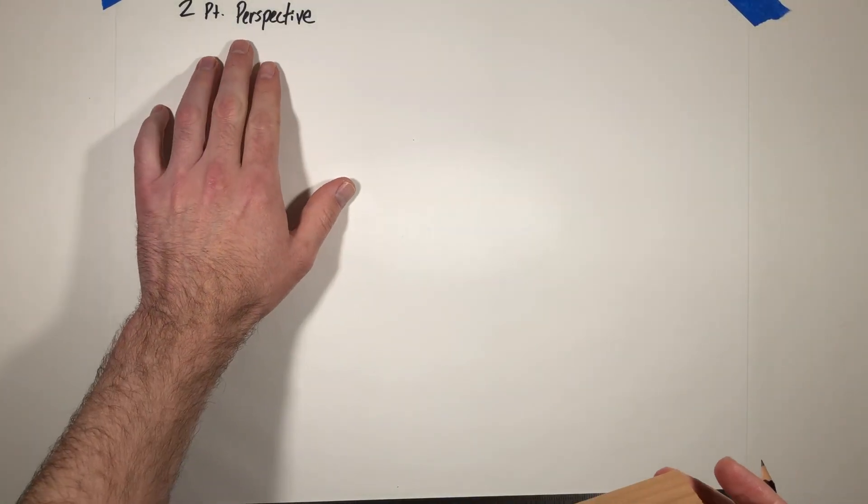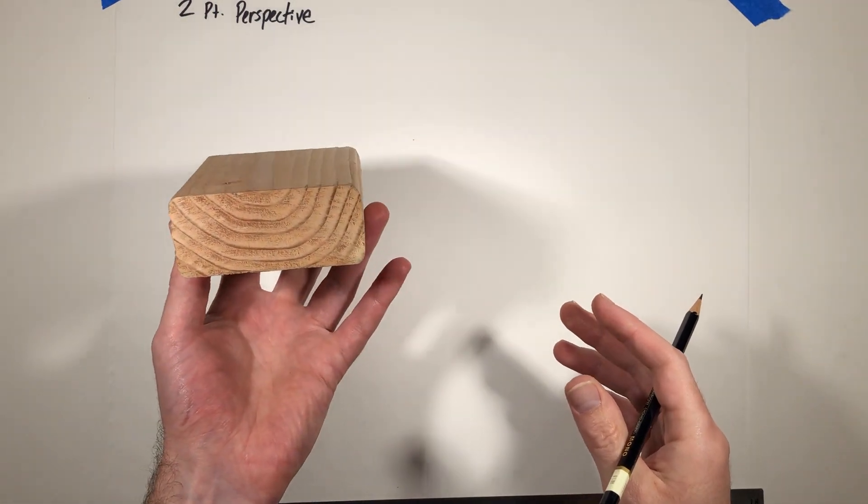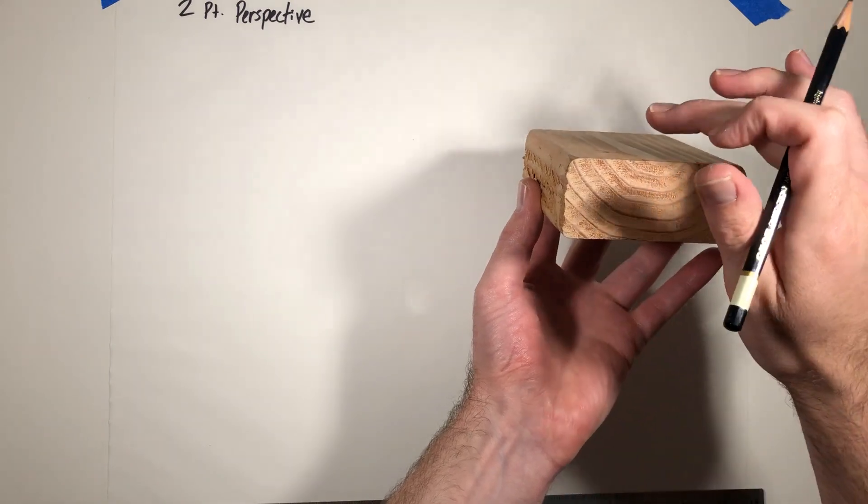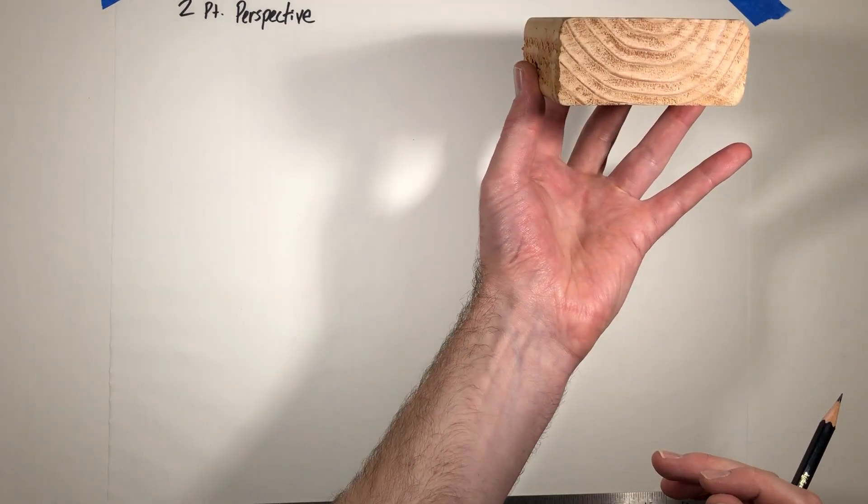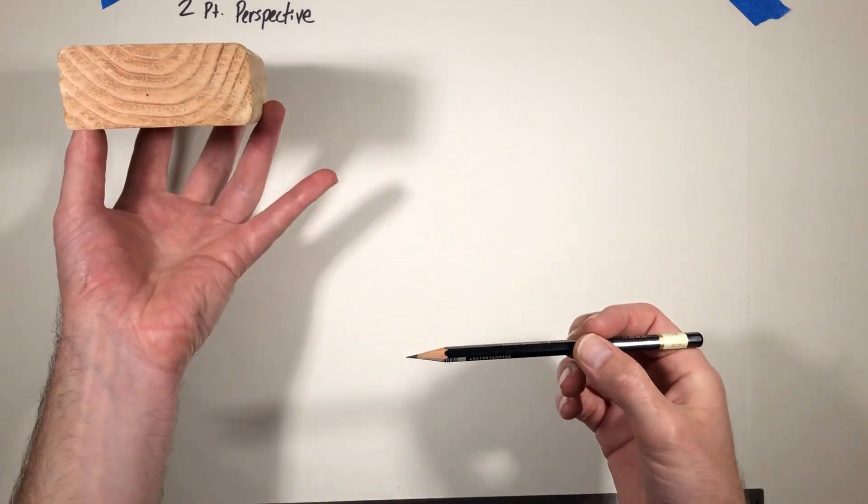All right guys, talking about two-point perspective today and a little overview again. One-point perspective is when you're square on to a cube-like form and you see the front, but you also might see a couple edges and how we can figure out how to draw in that view where you're totally square to the front.